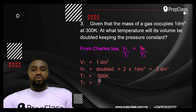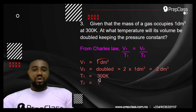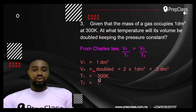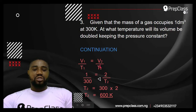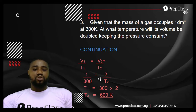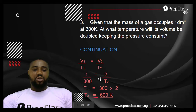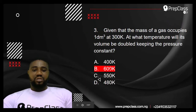V₁ is the initial volume: 1 dm³. V₂ is the doubled volume: 2 × 1 = 2 dm³. T₁ is 300 Kelvin. T₂ is unknown. Substituting: 1/300 = 2/T₂. Cross-multiplying: T₂ = 300 × 2 = 600 Kelvin. Very simple. The answer is 600 Kelvin.